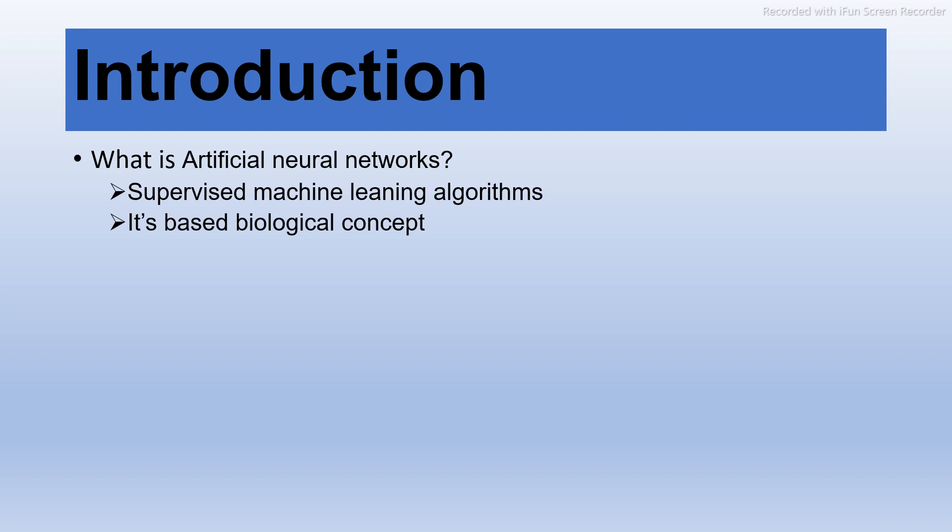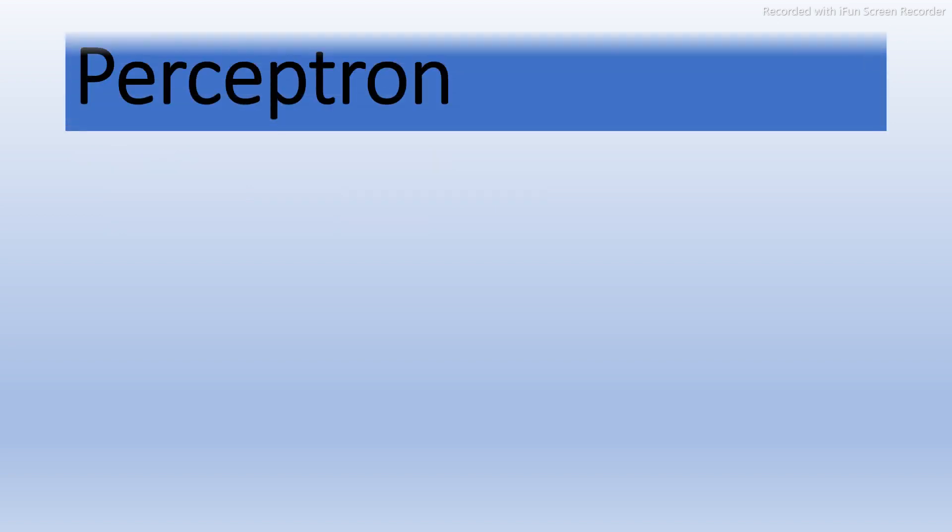Artificial neural networks are based on the biological concept of how neurons are connected in our brain. Each layer consists of a set of units. Our brain has neurons with parts like dendrites, axon, and cell body. This similarity between our brain and machines is why it's called a neural network — and when applied to machines, it's called an artificial neural network.